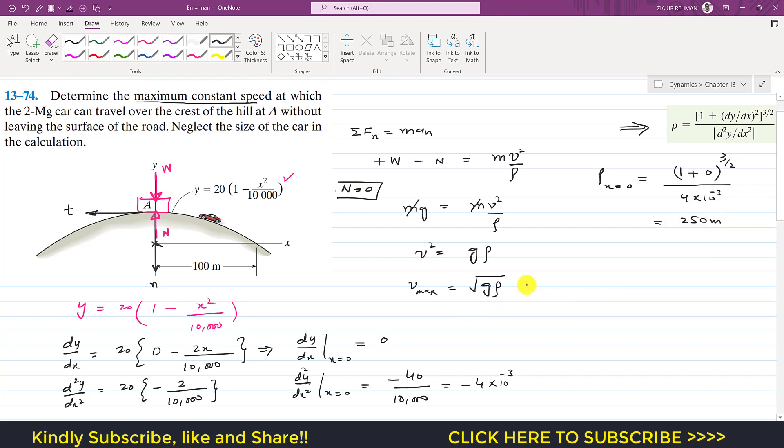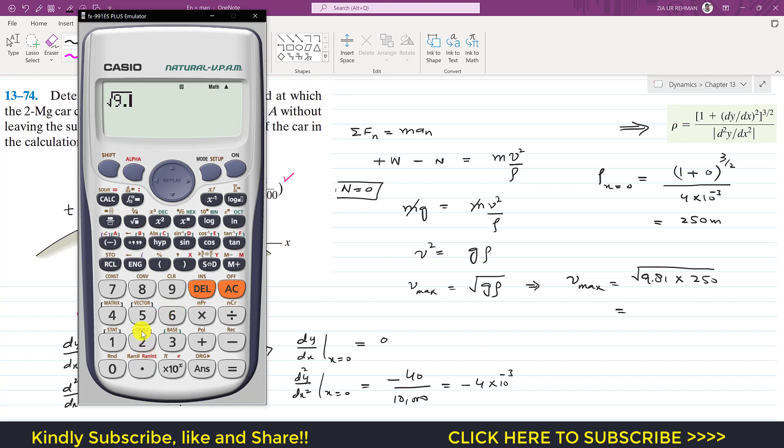Now we can find that maximum velocity using this equation. So v_max equals to 9.81 into that radius of curvature at that point A. So v_max is 9.81 into 250.